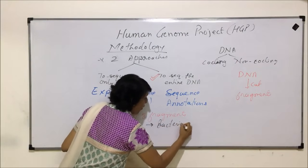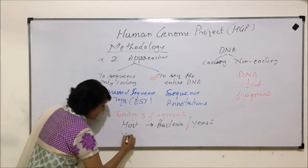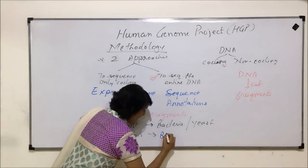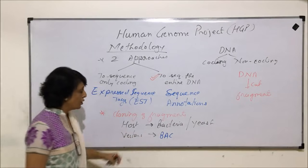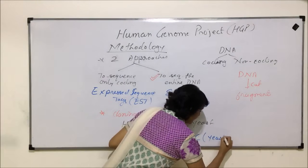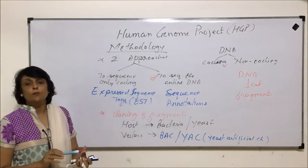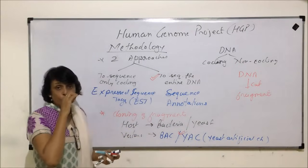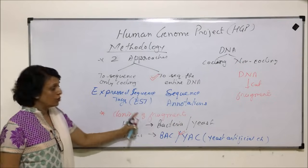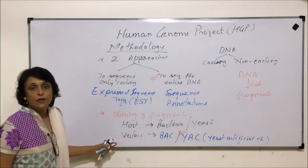The host cells used were either bacteria or yeast — one prokaryotic and one eukaryotic host cell. The vectors initially used were BAC (Bacterial Artificial Chromosome) and YAC (Yeast Artificial Chromosome). When the project was finally executed, YAC was the vector used.